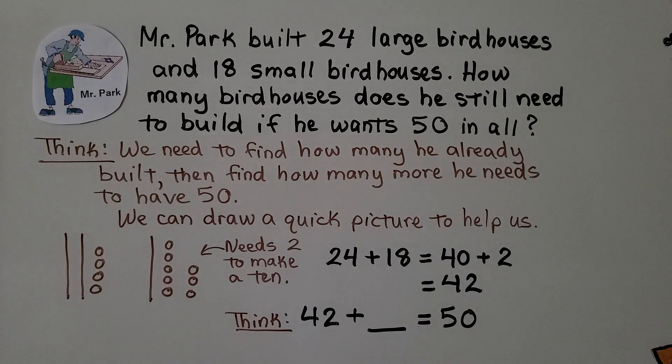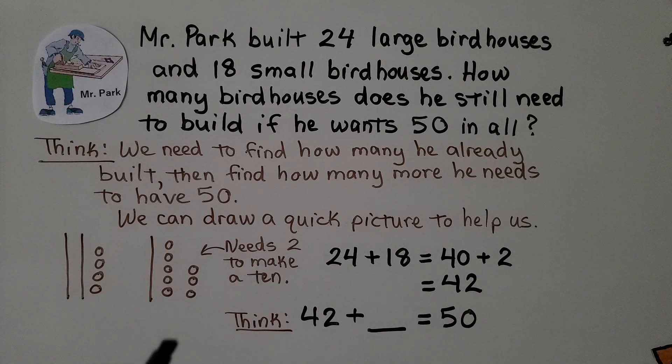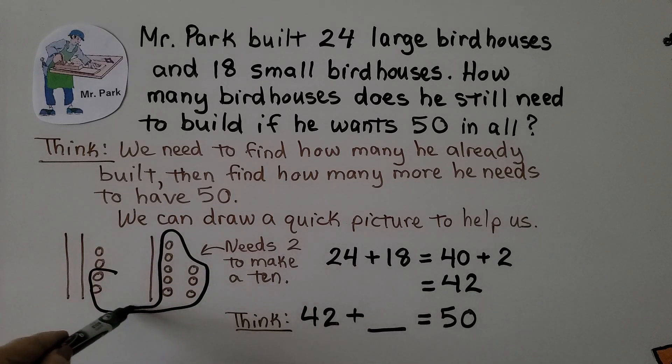Mr. Park built 24 large birdhouses and 18 small birdhouses. How many birdhouses does he still need to build if he wants 50 in all? We think we need to find how many he already built. Then find how many more he needs to have 50. We can draw a quick picture to help us. We have 24 and 18. That's two tens and four ones. And one ten, eight ones. These eight ones just need two more to make a ten.